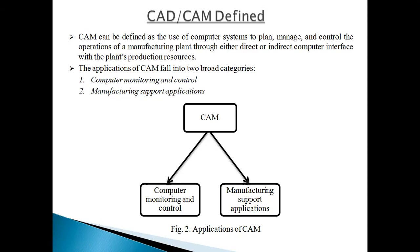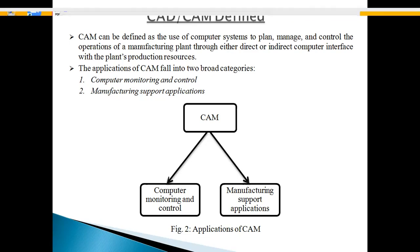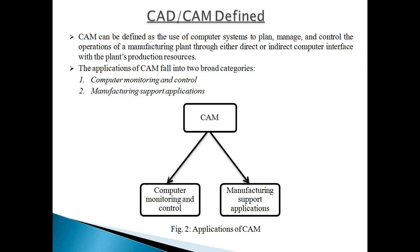The first part is computer monitoring and control, which means the computer only monitors or controls your machine. The second part is manufacturing support application. This means that when manufacturing any part, the computer checks if it is okay — scanning that part, checking the dimension of the part. Both are related to your CAM activity.